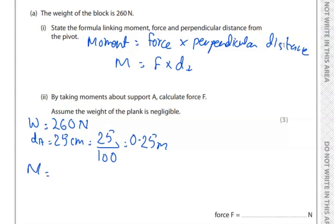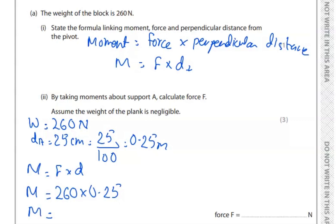We can find the moment using force times distance: 260 times 0.25, which equals 65 newton metres.